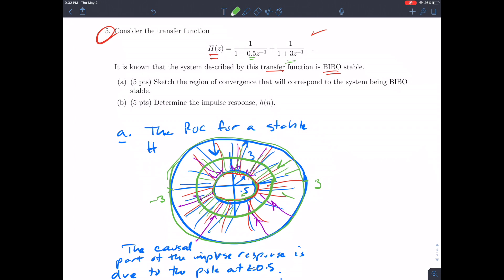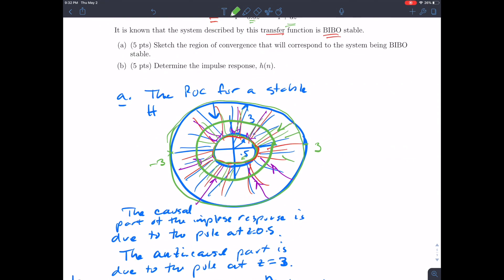So if we intersect the disk with a shape that radiates out, we get this donut. This is the region of convergence for this stable transfer function.